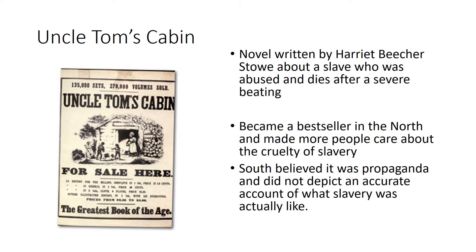Another issue that created more animosity between the North and South was the release of the novel Uncle Tom's Cabin. Written by Harriet Beecher Stowe, it told the story of a slave who was abused and dies after a severe beating. It became a bestseller in the North and made more people care about the cruelty of slavery. However, the South found it to be demonizing propaganda that did not depict an accurate account of slavery. Many Southerners defended slavery, saying it was good for African Americans and made them more civil.